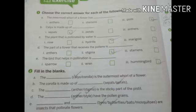Now number D: The part of a flower that receives the pollen is Stigma. Now number E: The bird that helps in pollination is Hummingbird. Now number 2.